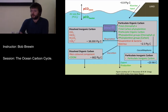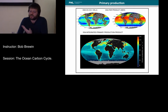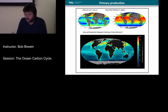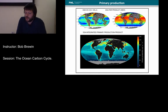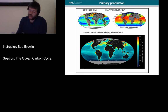Moving briefly onto primary production — ocean colour products such as chlorophyll A concentration or phytoplankton carbon concentration, together with photosynthetically available radiation and sometimes other variables like temperature, are used to estimate primary production from space.